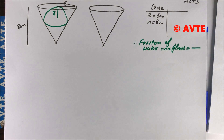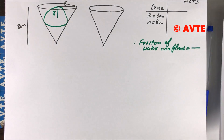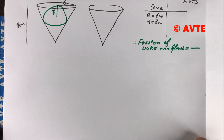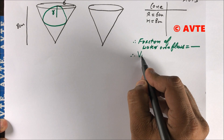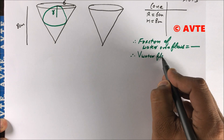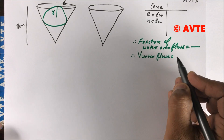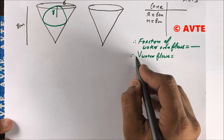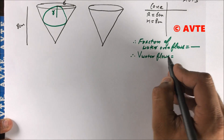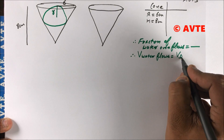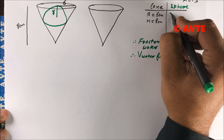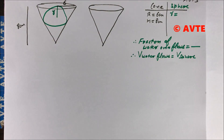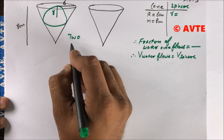We have to find the fraction of water that overflows. It is understood that the volume of water that overflows is due to the immersion of the sphere. So volume of water overflow is equal to volume of the sphere. For that, we need to find the radius of the sphere, and I will tell you two methods.